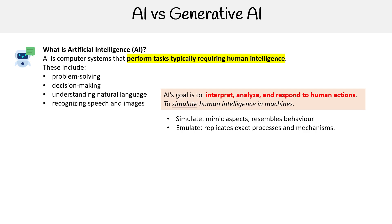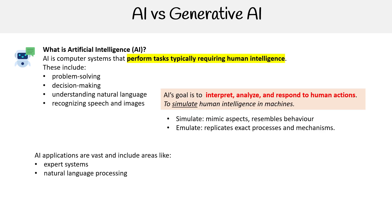You could say emulation is pretty much AGI — artificial general intelligence. The point is that AI is a simulation, not an emulation. AI applications are vast and include areas such as expert systems, natural language processing, speech recognition, robotics, and more.